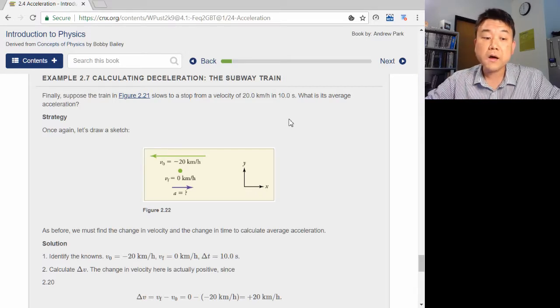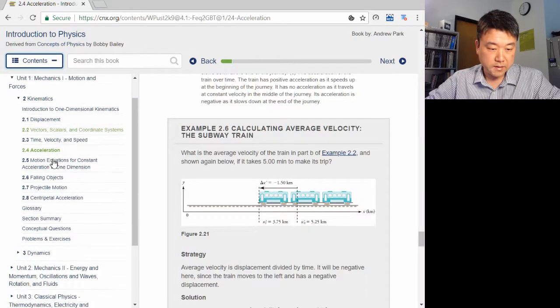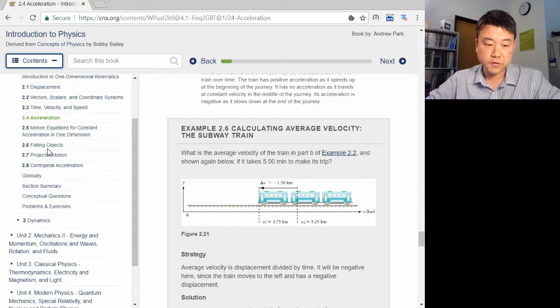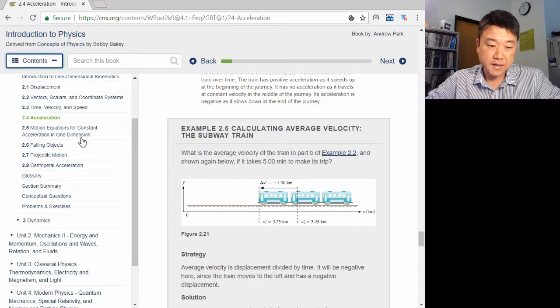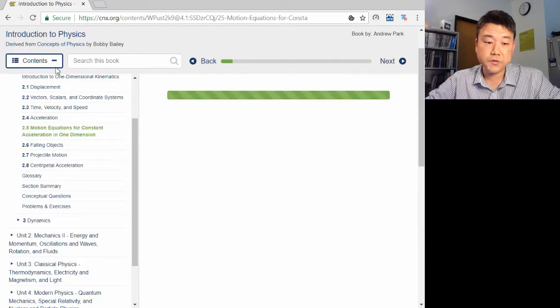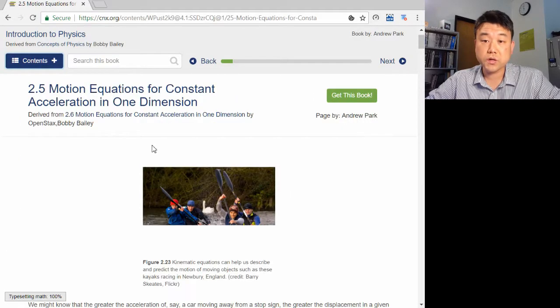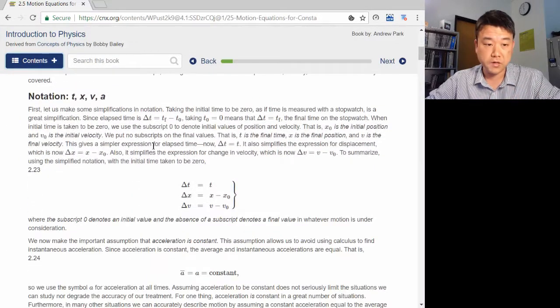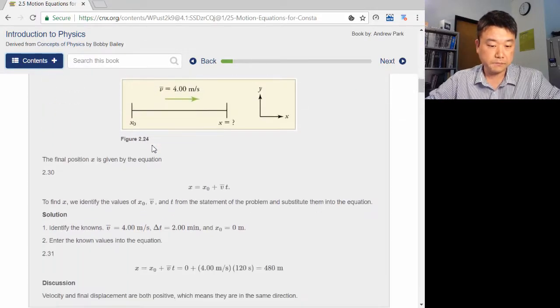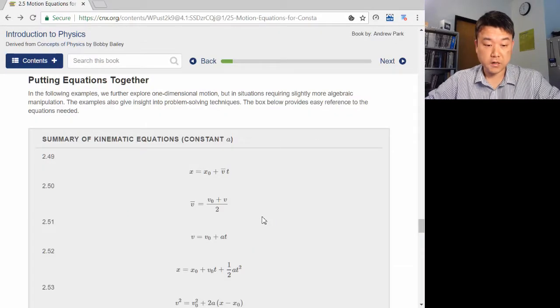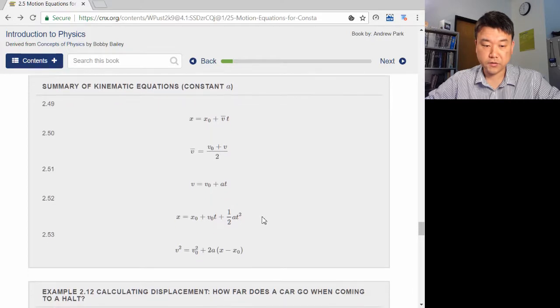Now, with the next two sections, that is section 2.5 and 2.6, things will get a little bit more mathematical. Section 2.5 gives you kinematics equations for motion in one dimension with a constant acceleration. Here's the summary of equations that's introduced in this section.